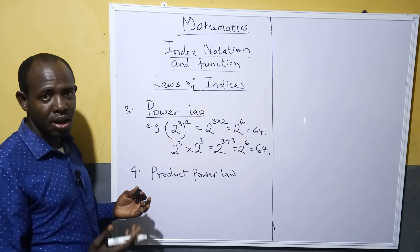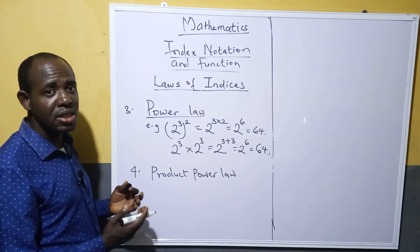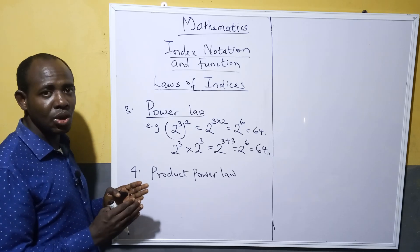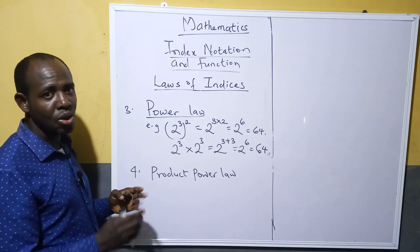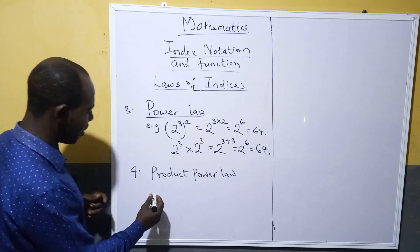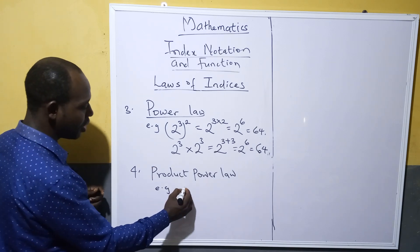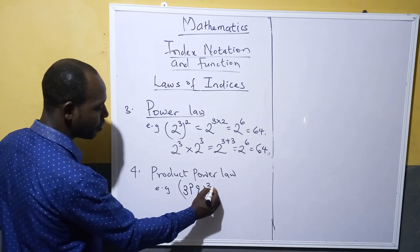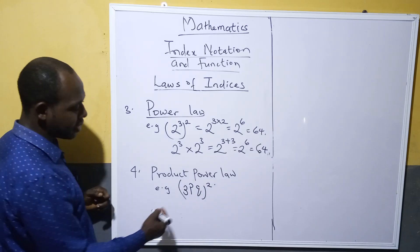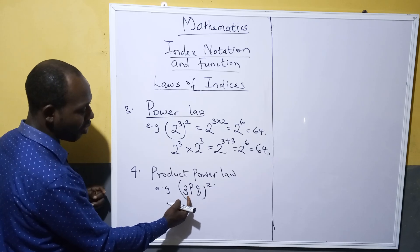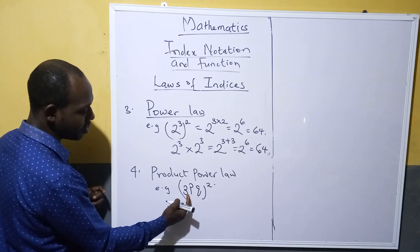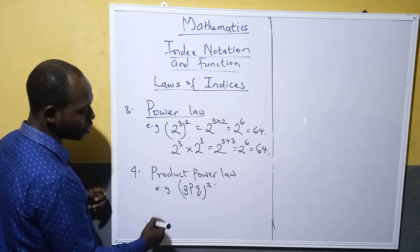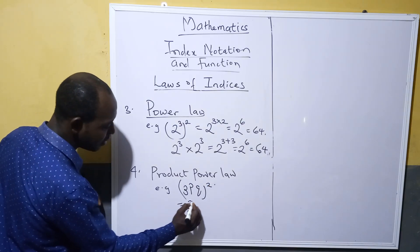This one states that if you have numbers or different factors raised to a particular power, then you have to raise each of the number or factor to that power. For example, if you have (3pq) raised to power 2, the law states that you raise each of this number and alphabet to the power of 2.